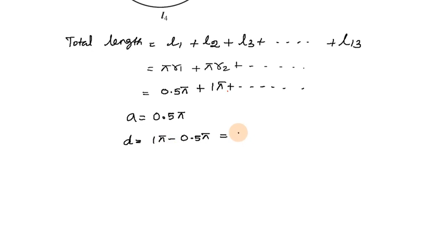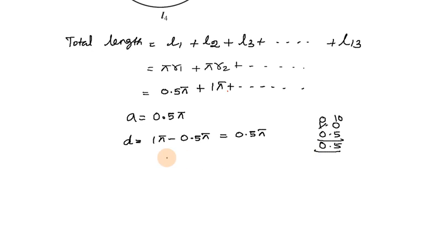The radii are 0.5, 1, 1.5, 2, 2.5, 3, 3.5, 4, 4.5, 5, 5.5, 6, and 6.5. The last term is 0.5 × 13 = 6.5. We separate 0.5 and find the total length by adding all terms.